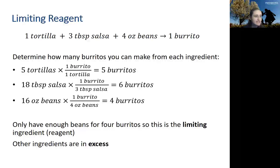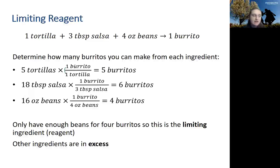From five tortillas, I can make five burritos — one tortilla for every burrito, so that's a one-to-one conversion. From 18 tablespoons of salsa, I can make six burritos, because I need three tablespoons of salsa for every one burrito. And from 16 ounces of beans, I can make four burritos, because there are four ounces of beans for every one burrito.